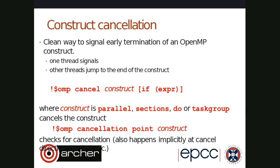The next topic is construct cancellation. This is a clean way to signal early termination of an OpenMP construct. While you're inside a parallel region, essentially one thread can raise a signal, and then as soon as possible, other threads observe that signal and jump straight to the end of the construct. This is useful if you're trying to do parallel searches and you just want everything to stop as soon as you've found the first instance. The directive for this is 'cancel', and you have to specify what construct you're cancelling — a parallel region, sections construct, a parallel loop (do in Fortran or for in C/C++), or task group.